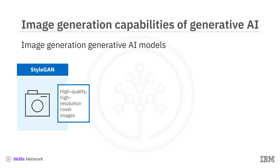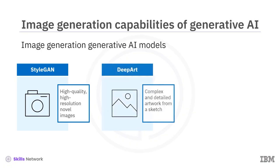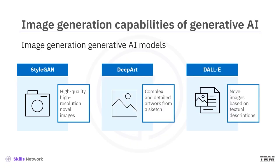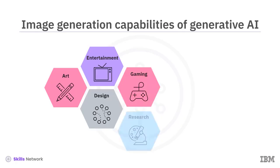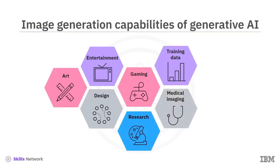StyleGAN, for example, can generate high-quality, high-resolution new images of imaginary faces, animals, or nature. While Deep Art can create comprehensive artwork from a simple sketch, DALL-E can generate entirely new images as described by the users. Apart from applications in art, design, entertainment, gaming, and research domains, generated images can augment training data and aid medical imaging and scientific visualization.